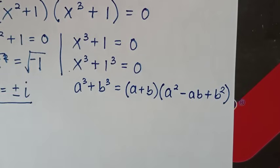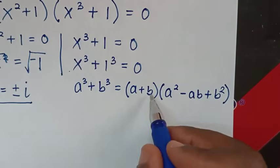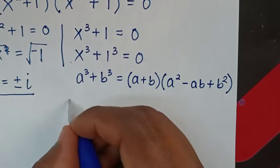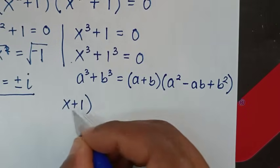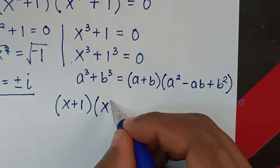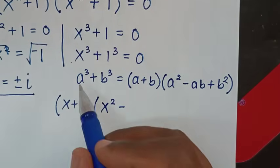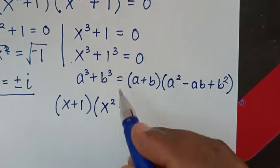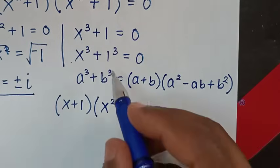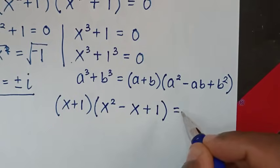Then in the next step we apply this form. For a plus b it will be x plus 1, so x plus 1 bracket. For a squared it will be x squared, then minus a times b where a is x and b is 1 so x times 1 is x, then plus b squared which is 1 squared equal to 1. The bracket is equal to 0.